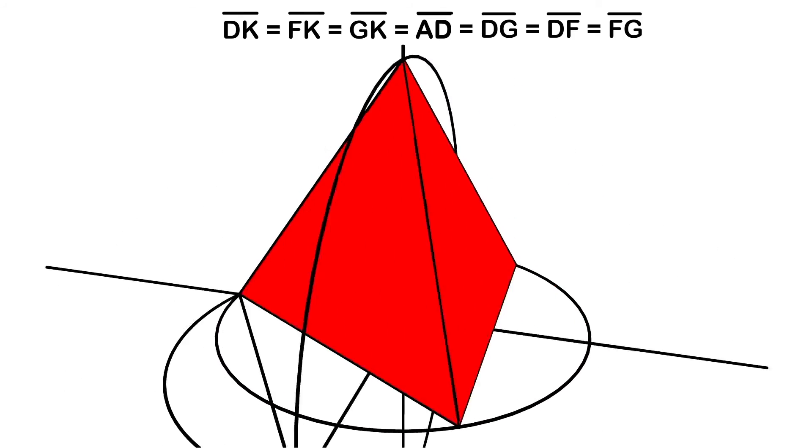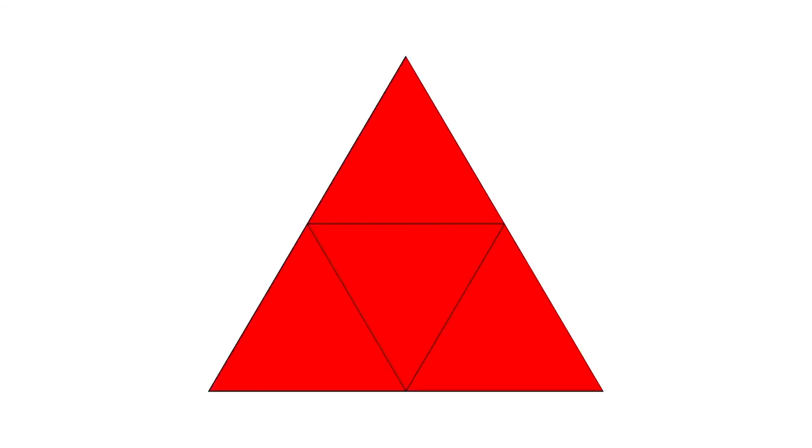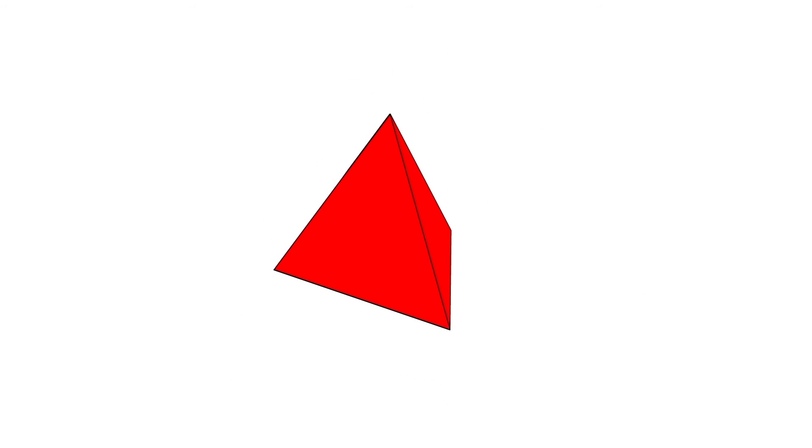So, Plato is correct that the tetrahedron consists of four equilateral triangles, and, as a result, the tetrahedron does exist.